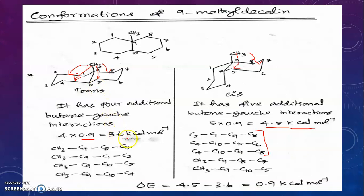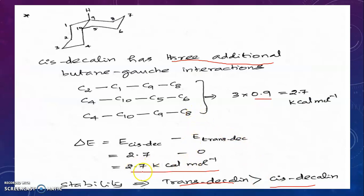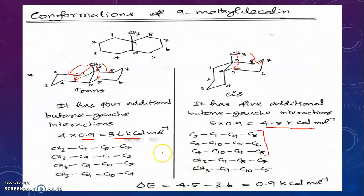Trans-decalin remains more stable because it has lower energy. The energy difference: for plain decalin it is 2.7 kcal/mol between cis and trans; for 9-methyldecalin the energy difference is 4.5 − 3.6 = 0.9 kcal/mol. The inference is that introducing a methyl group at position 9 decreases the energy difference between the cis and trans isomers.